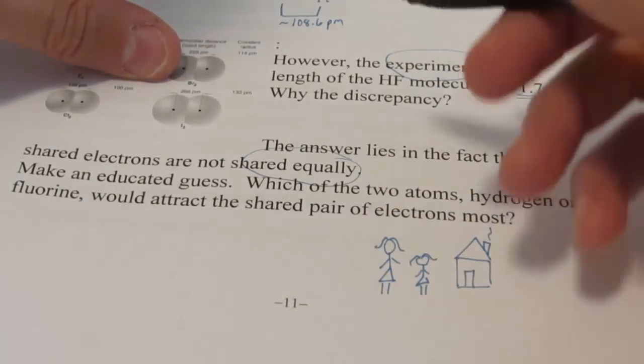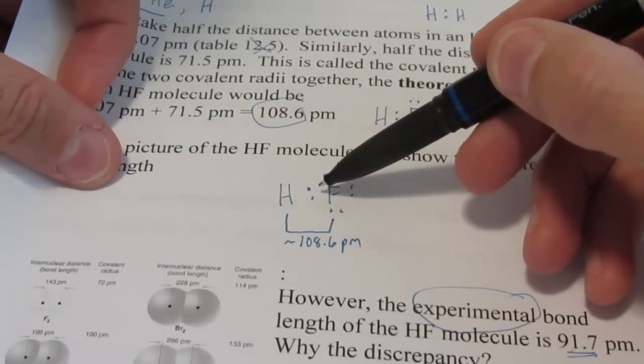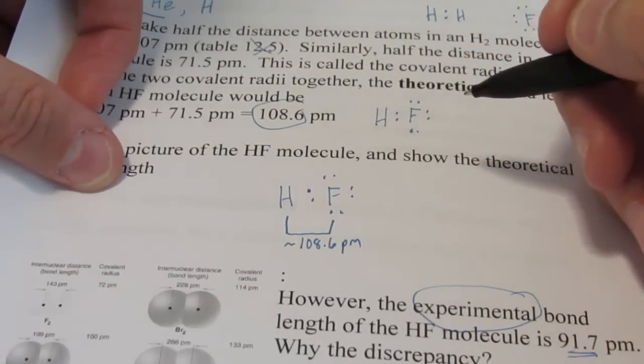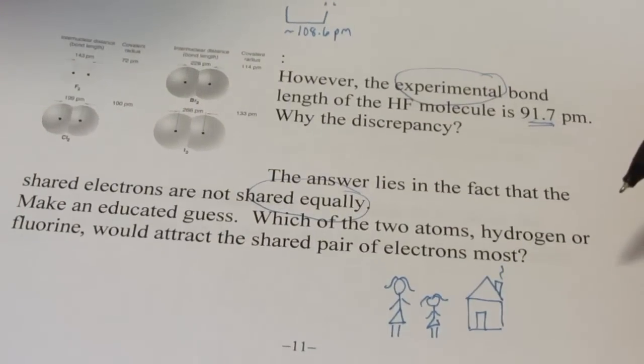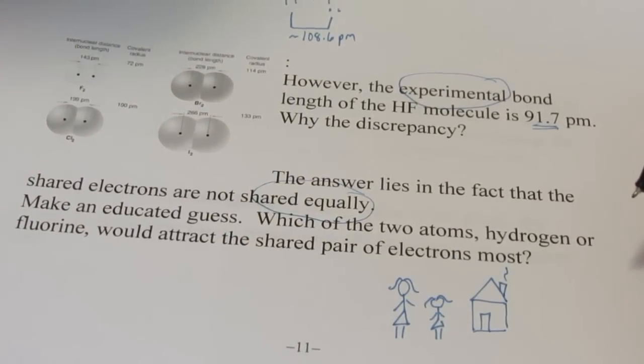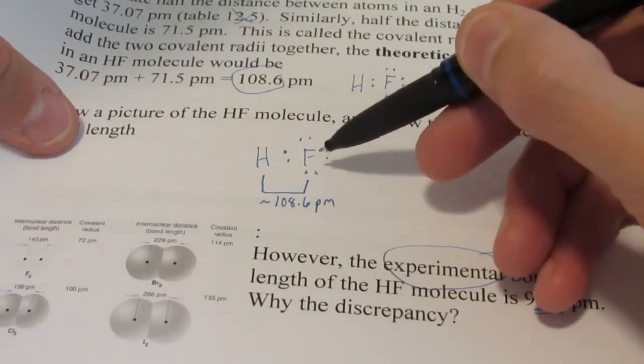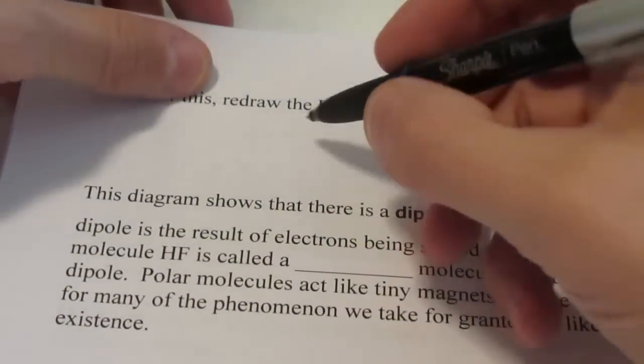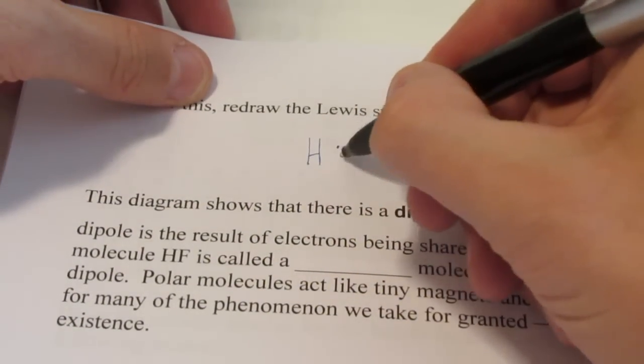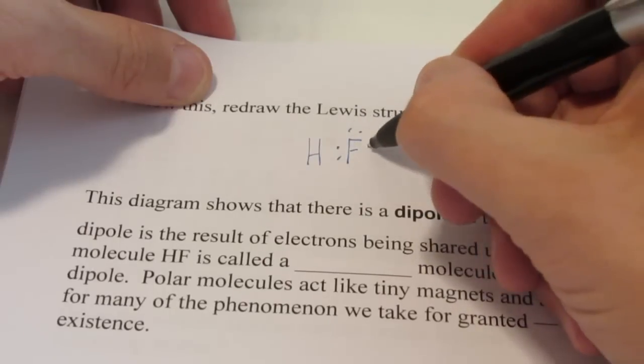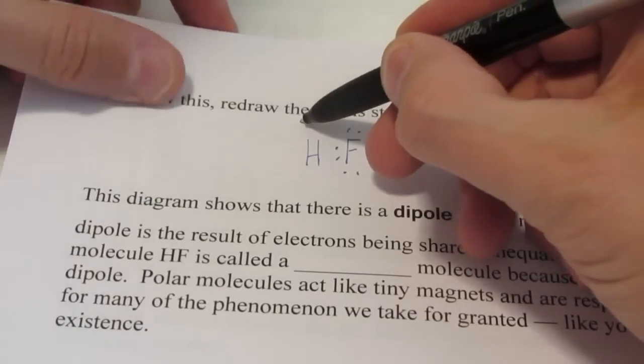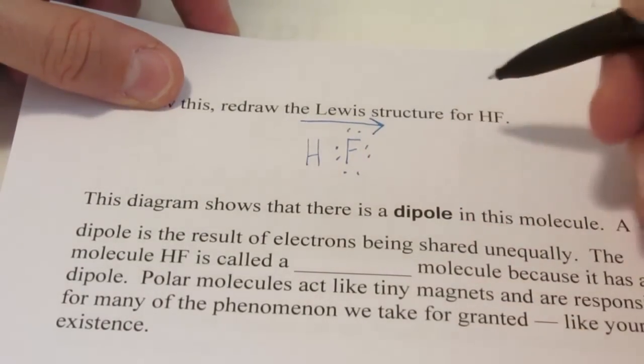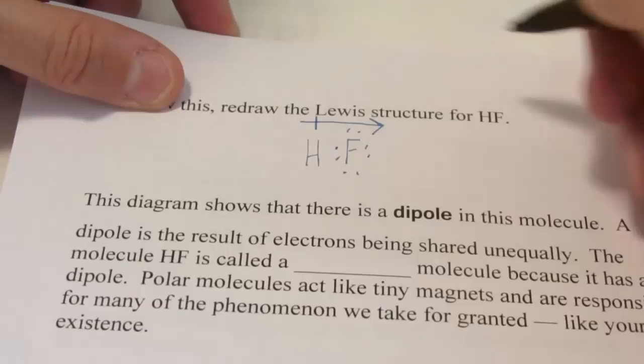Now, atoms are very similar. When they share a pair of electrons, that pair of electrons is not necessarily shared equally. Make an educated guess. Which of the two atoms, hydrogen or fluorine, do you think would attract the shared pair most? If you said fluorine, you are correct. Fluorine does. Take that shared pair of electrons, and that shared pair spends more time around fluorine than it does around hydrogen. To show this, we draw an arrow pointing to the atom that gets the shared pair more often. And then we put a little line over the other atom.